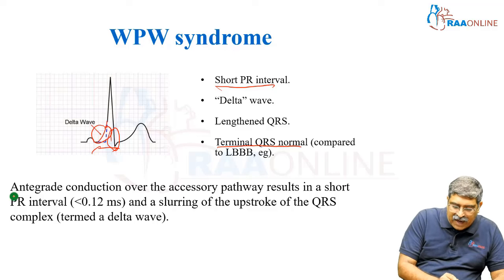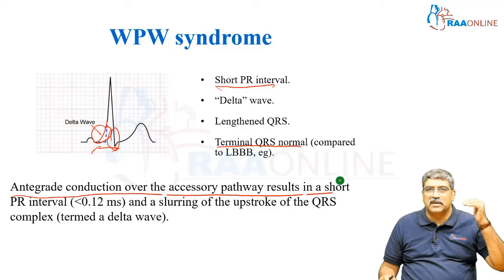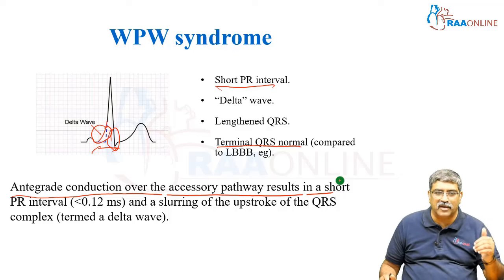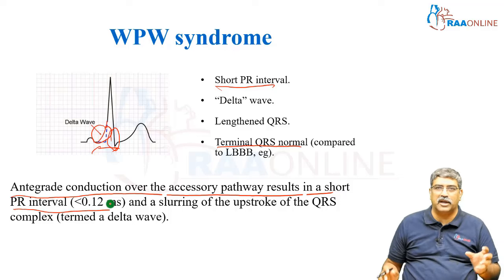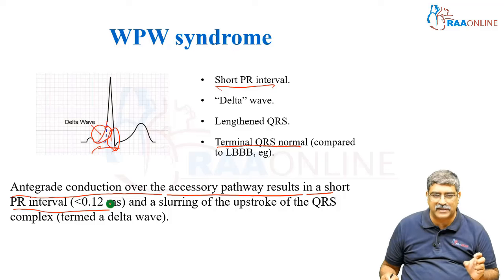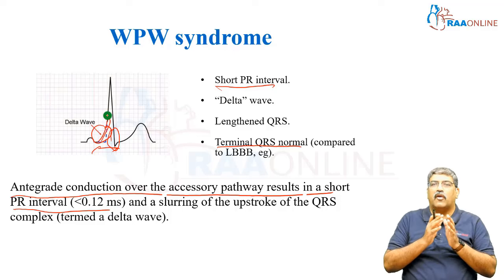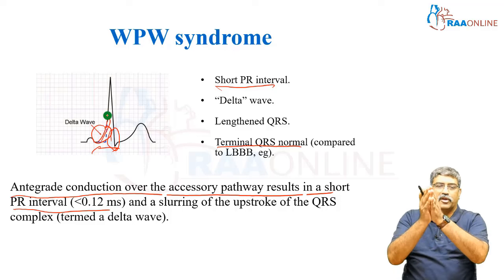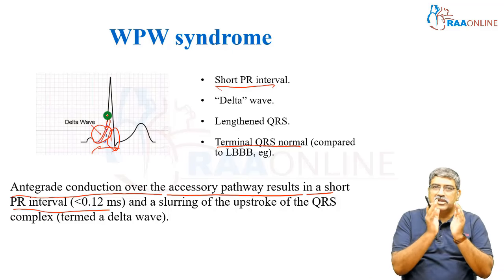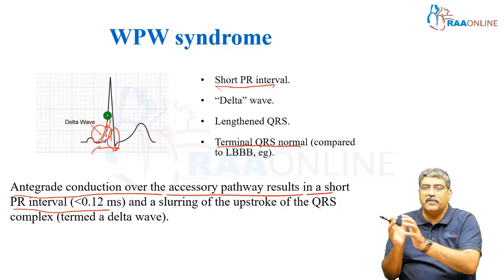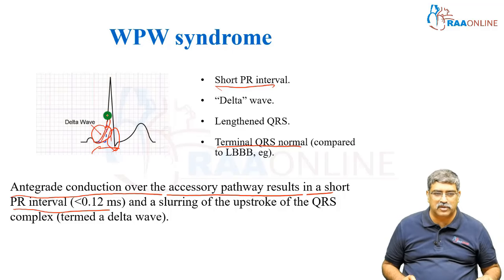There is antegrade conduction over the accessory pathway, that is the Kent pathway, which results in a short PR interval less than 0.2 milliseconds, and there is a slurring of the upstroke of the QRS which is named as a delta wave. This short PR interval and delta wave are the hallmark of WPW syndrome.